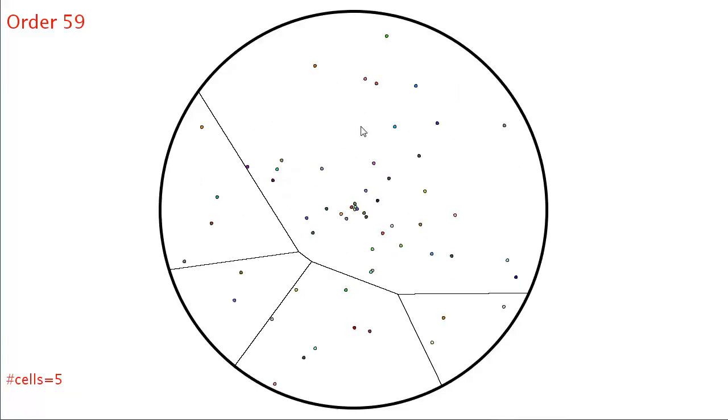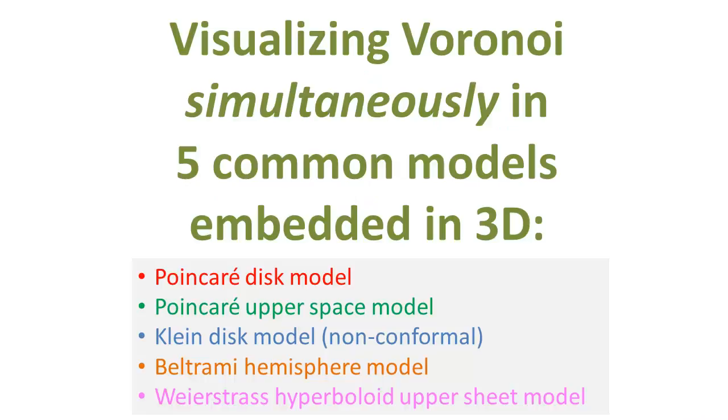We visualize the hyperbolic Voronoi diagram in the five common models of hyperbolic geometry by embedding them all together in 3D Euclidean space. All models except Klein are conformal.